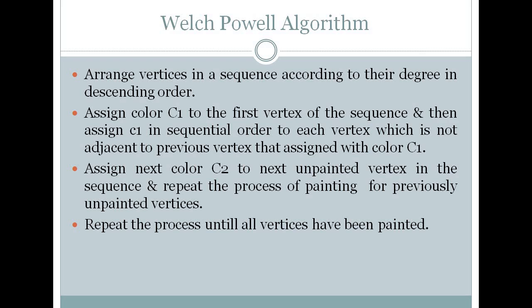Step number two is assign color C1 to the first vertex of the table, and then color C1 to those vertices which are not adjacent to that vertex. Step number three is assign the next color to the next unpainted vertex and repeat the painting as previously. Fourth step is repeat the whole process until all the vertices are being painted.